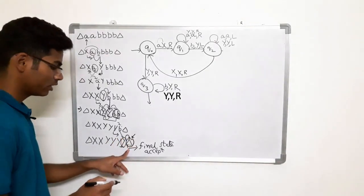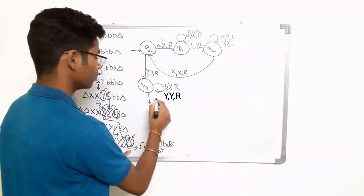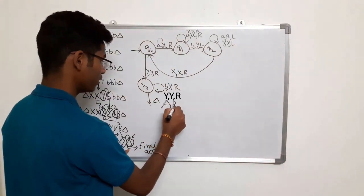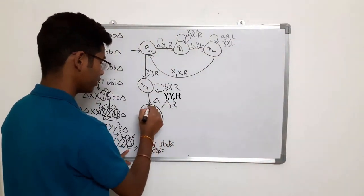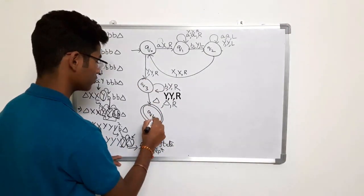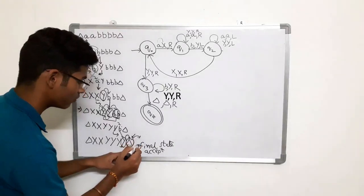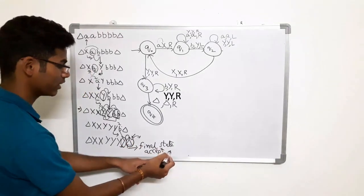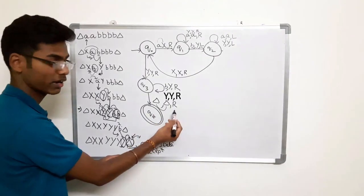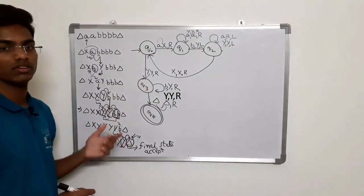Now your current position is here. In order to reach the final state, we have to go one step right. Keep delta as it is and move towards right, reaching the final state. Let us name this as q4. After reaching one step right, we have reached the final state — we kept delta as it is and moved towards right. This is the Turing machine for this question.